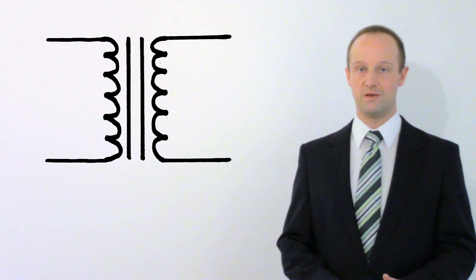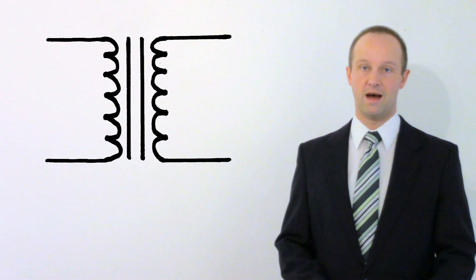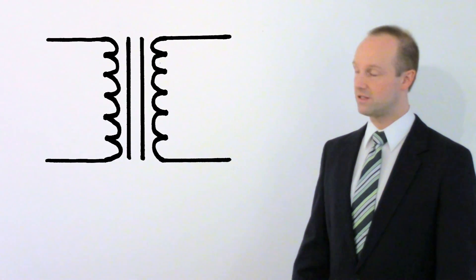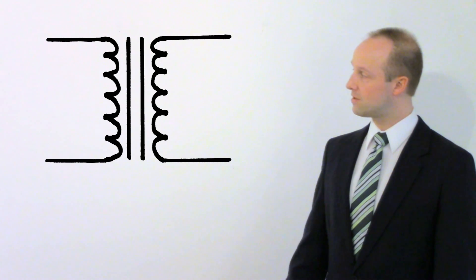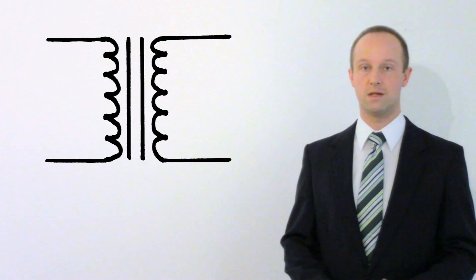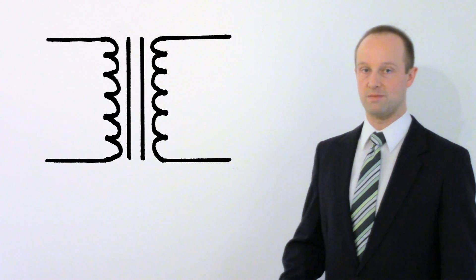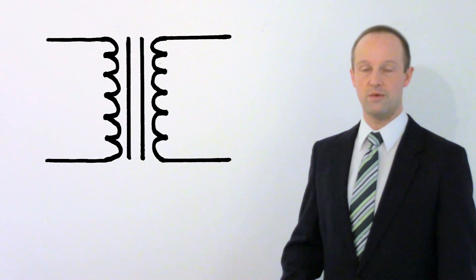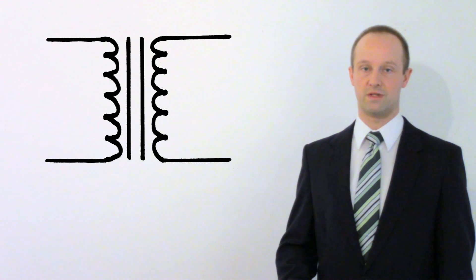There's another useful property of transformers and that depends on how many turns there are on each coil. If there are twice as many turns on the secondary coil we get twice the potential difference induced across it. If there are three times as many turns on the secondary coil then we get three times the induced potential difference.